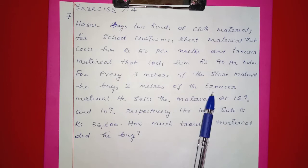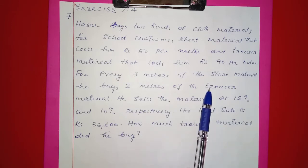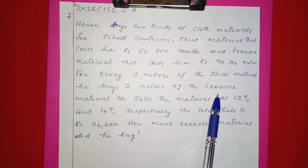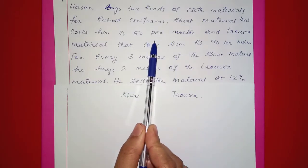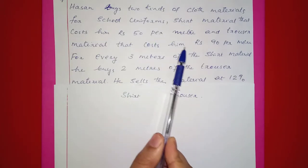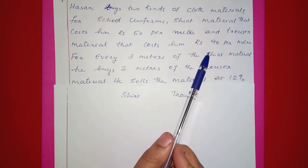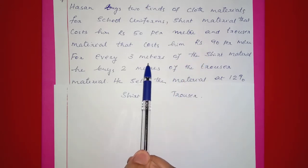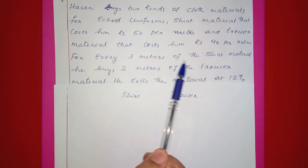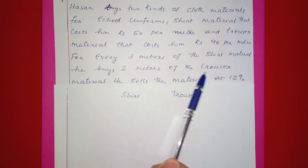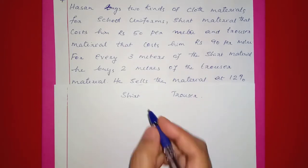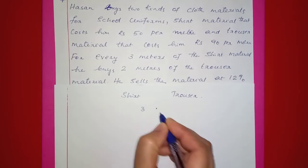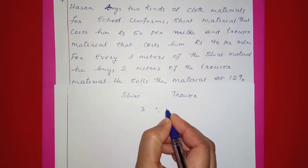Let's talk about the shirt material and trouser material. Shirt material is Rs.50 per meter, trouser material is Rs.90 per meter. For every 3 meters of the shirt material, he buys 2 meters of the trouser material. That means the shirt and trouser are in a ratio of 3 to 2.